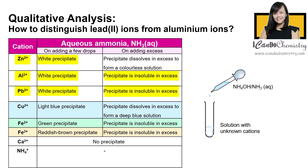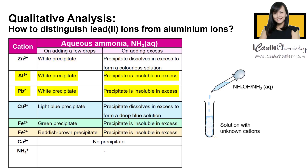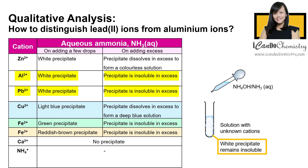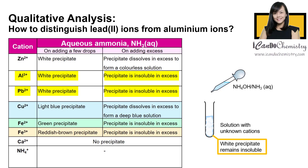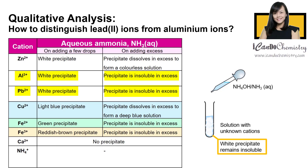If we add aqueous ammonia in excess and there is no observable change to the white precipitate, then we can say that the white precipitate does not dissolve in excess aqueous ammonia. In that case, the two possible ions that are present must be aluminium or lead-2.